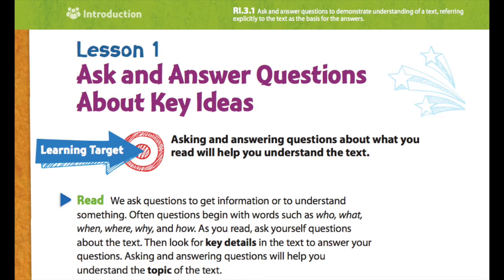Then you can look for key details. There's one of our text features — it's in bold print, so it must be important — in the text to answer your questions. So we're going to look for key details in the text to answer our questions. Asking and answering questions will help you understand the topic of the text. Topic is also in bold print, so that also must be important for us to know. The topic is what the whole story or the whole text is about — the main idea of the text or story. So those are our two important words: key details and the topic of the text.